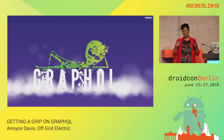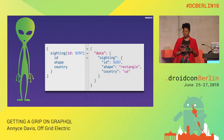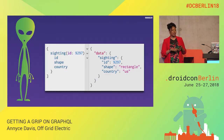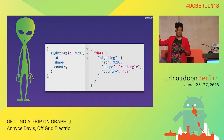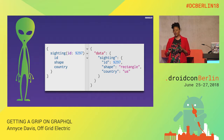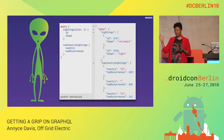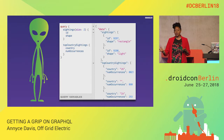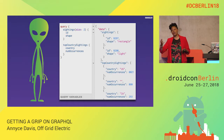GraphQL aims to fix all of those challenges. First, you only get what you ask for — if I say I want the UFO sighting with this ID and just the ID, shape, and country, that's all I get back: nothing extra, nothing that's not needed by my UI. Next, I can make multiple requests at the same time. If I want UFO sightings and another object like top country sightings, I can make one request inside a query and get all the data back.